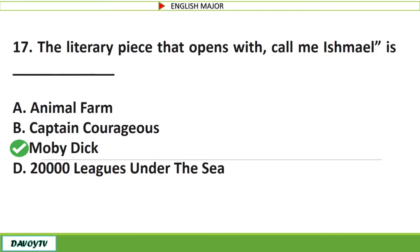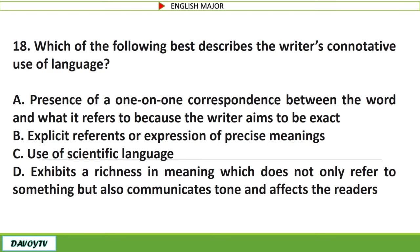Question number 18. Which of the following best describes the writer's connotative use of language? A. Presence of a one-on-one correspondence between the word and what it refers to because the writer aims to be exact. B. Explicit reference or expression of precise meanings. C. Use of scientific language. D. Exhibits a richness in meaning which does not only refer to something but also communicates tone and affects the readers.